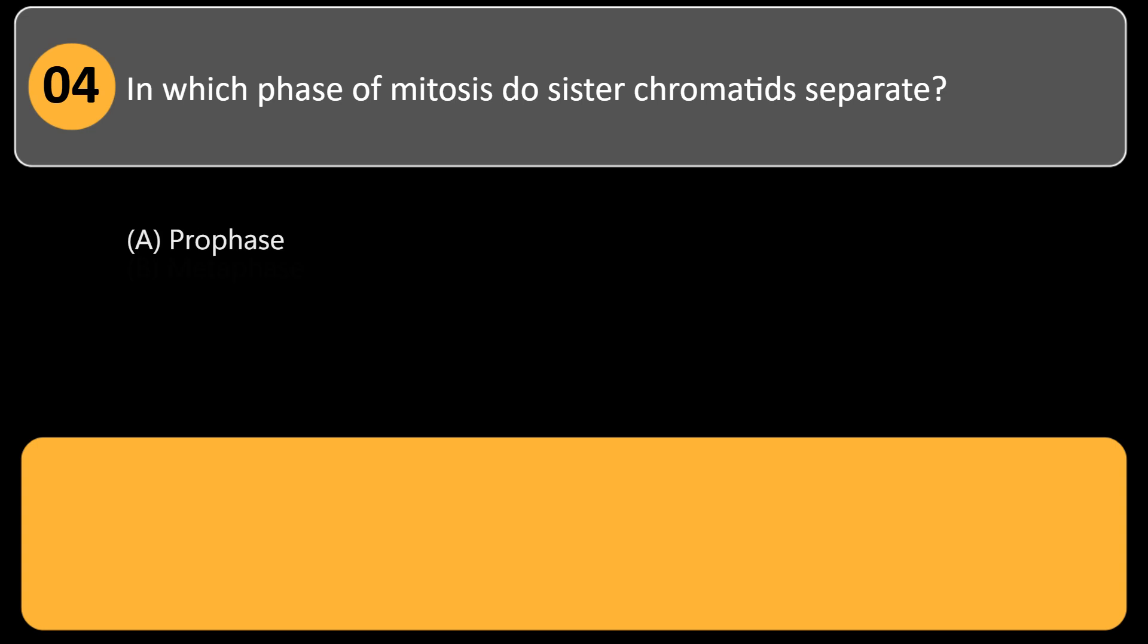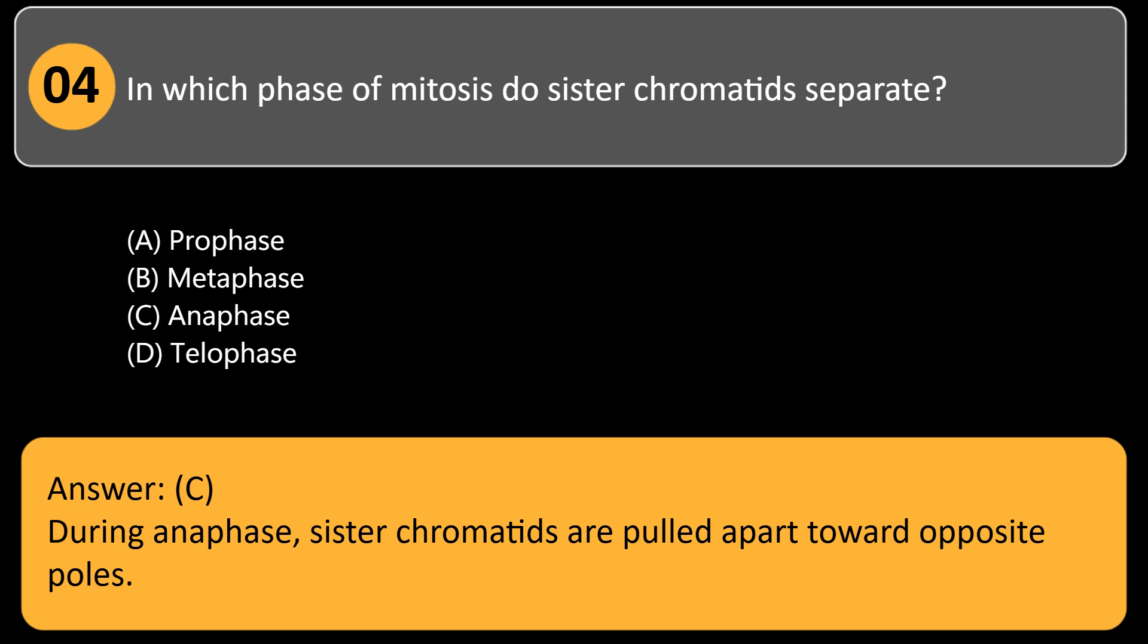In which phase of mitosis do sister chromatids separate? A. Prophase, B. Metaphase, C. Anaphase, D. Telophase. Answer: C. During anaphase, sister chromatids are pulled apart toward opposite poles.